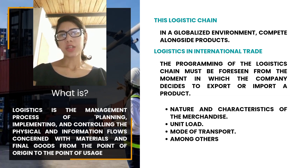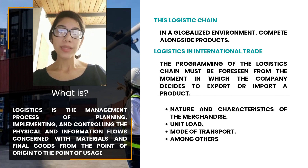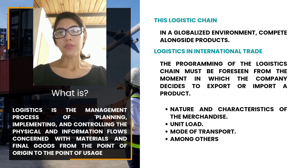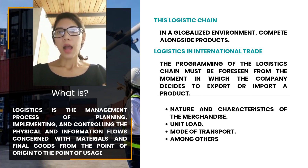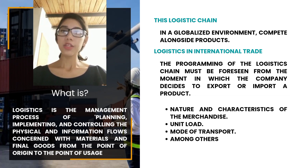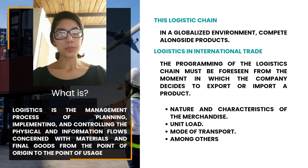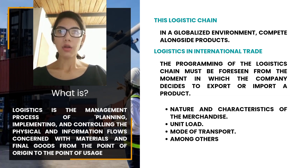Logistics in international trade: the programming of the logistics chain must be planned from the moment in which the company decides to export or import a product. It affects both the design of the packaging as well as the terms of the delivery agreed in the contract of sale, among other things. The main elements that must be considered are the nature and characteristics of the merchandise, unit load, and mode of transport, among others.